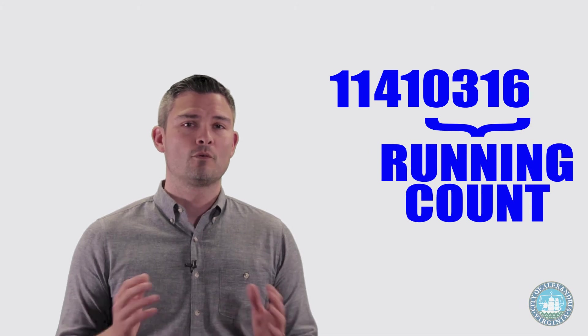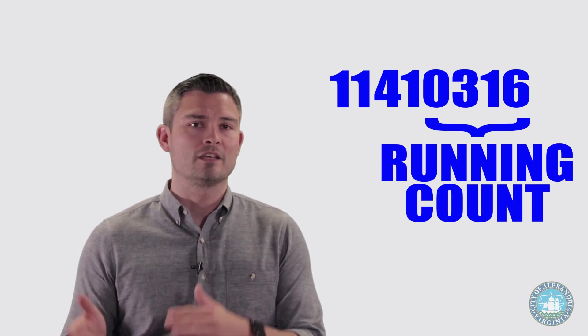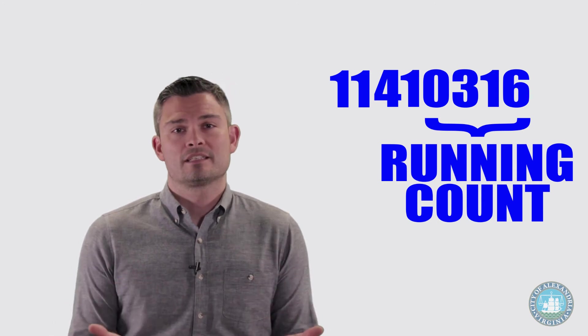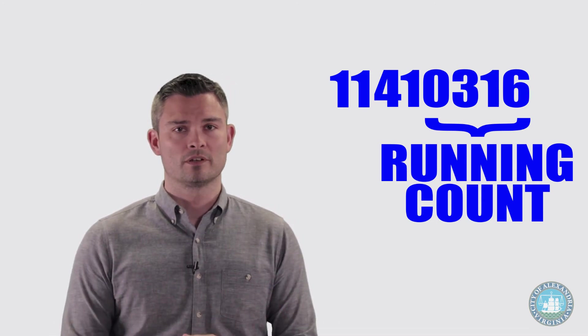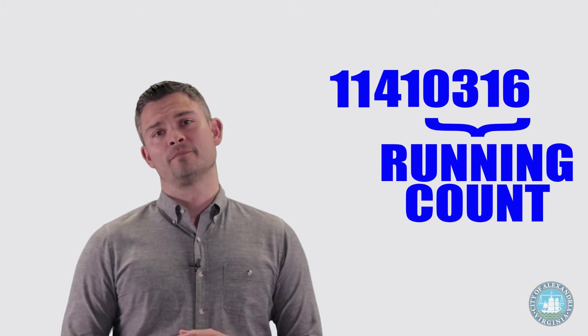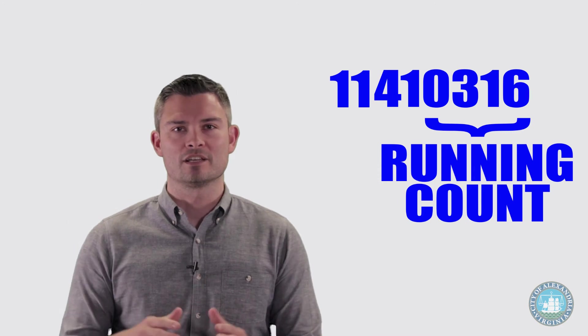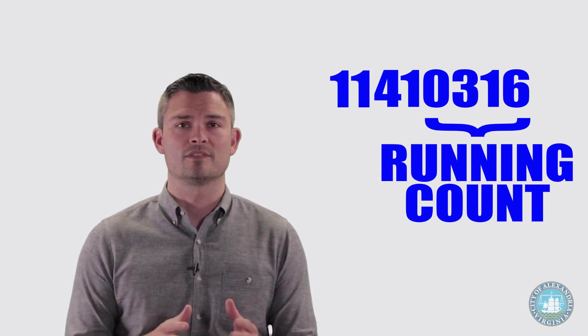And finally, the last four digits are a running count of all of the orgs that were in that fund when accounting created the org. So in this case, TESS's street maintenance org was the 316th org that we created in the general fund. This running count acts as a unique identifier, providing a means for us to quickly ensure that no two orgs will have the same number.